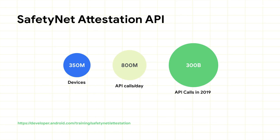The Safety Net Attestation API is an anti-abuse API that allows app developers to assess the Android device their app is running on. We encourage you to use this API as part of your abuse detection system to help determine whether your servers are interacting with your genuine app running on a genuine Android device. Safety Net Attestation API is used by more than 350 million devices today. We are seeing more than 800 million API calls per day, and last year we saw over 300 billion API calls.